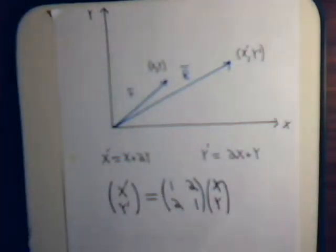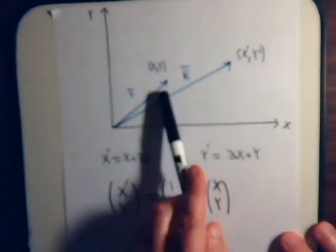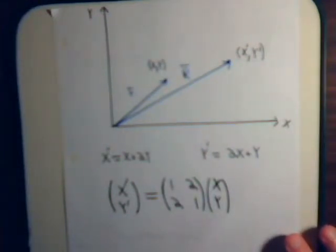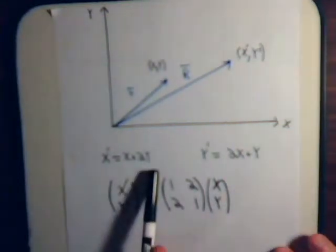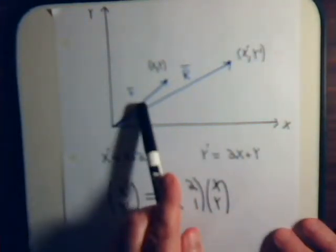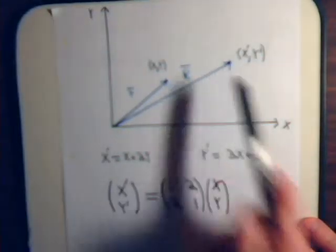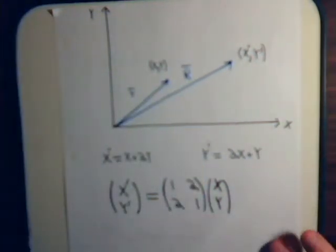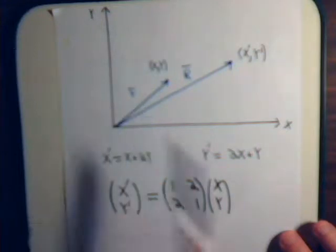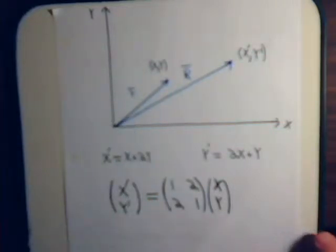This diagram is from video number 27. What we were considering there is we had an x and y axis and a vector, small vector r, comprised of points x and y. At each point x, y we generated a new set of points x prime, y prime using these equations. The whole collection of new points comprises the vector capital R, and notice that the magnitude of capital R is going to be larger than small r.